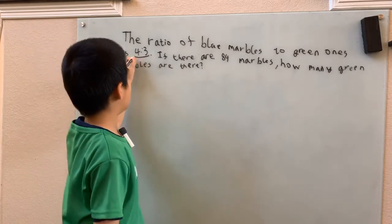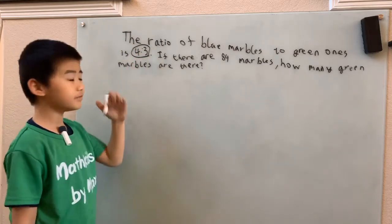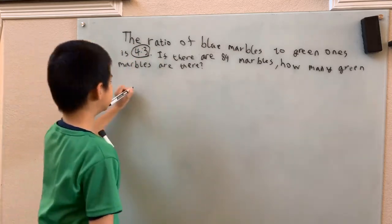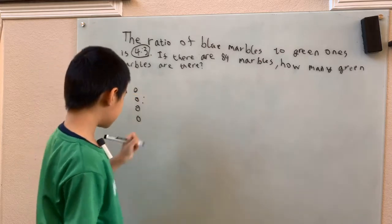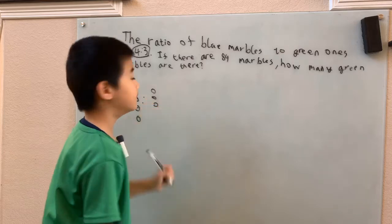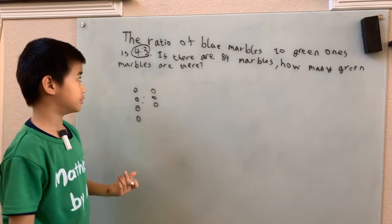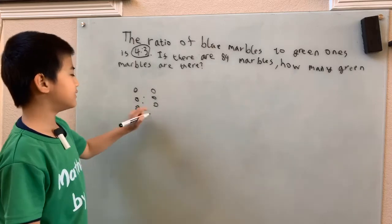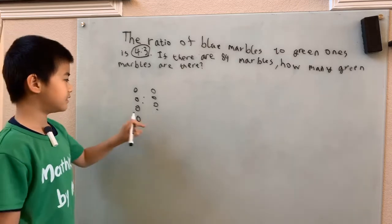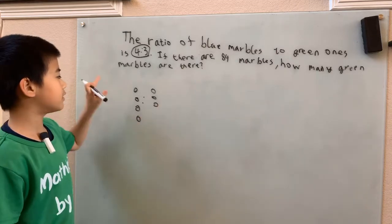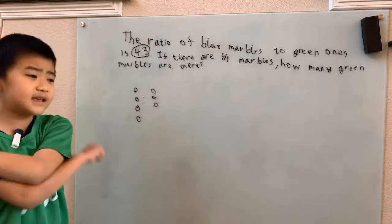First we gotta talk about what 4 to 3 even means. So 4 to 3 means that for every 4 blue marbles, I'm gonna have 3 more green ones. But this doesn't really tell us exactly how many green marbles there are. They just told us that every 4 blue marbles, there's gonna be 3 green marbles. Not exactly 3.